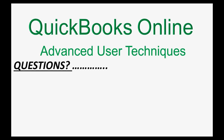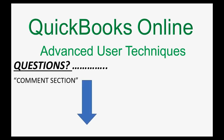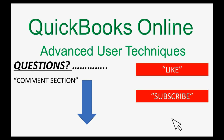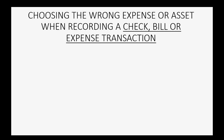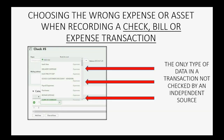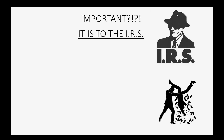If you have any questions about this topic you can leave them in the comment section below. If the video helped you, please click like and subscribe to get updates on new videos. Choosing the wrong expense or asset when recording a check, bill, or expense type of transaction is in fact the only type of data in a transaction not checked by an independent source.